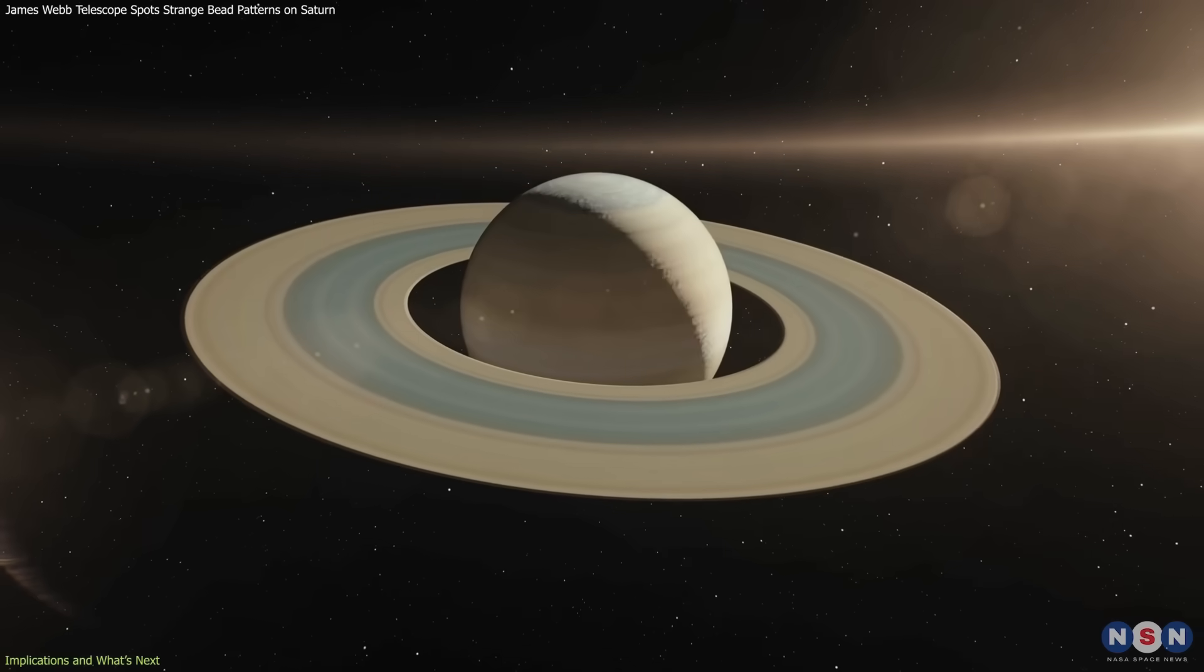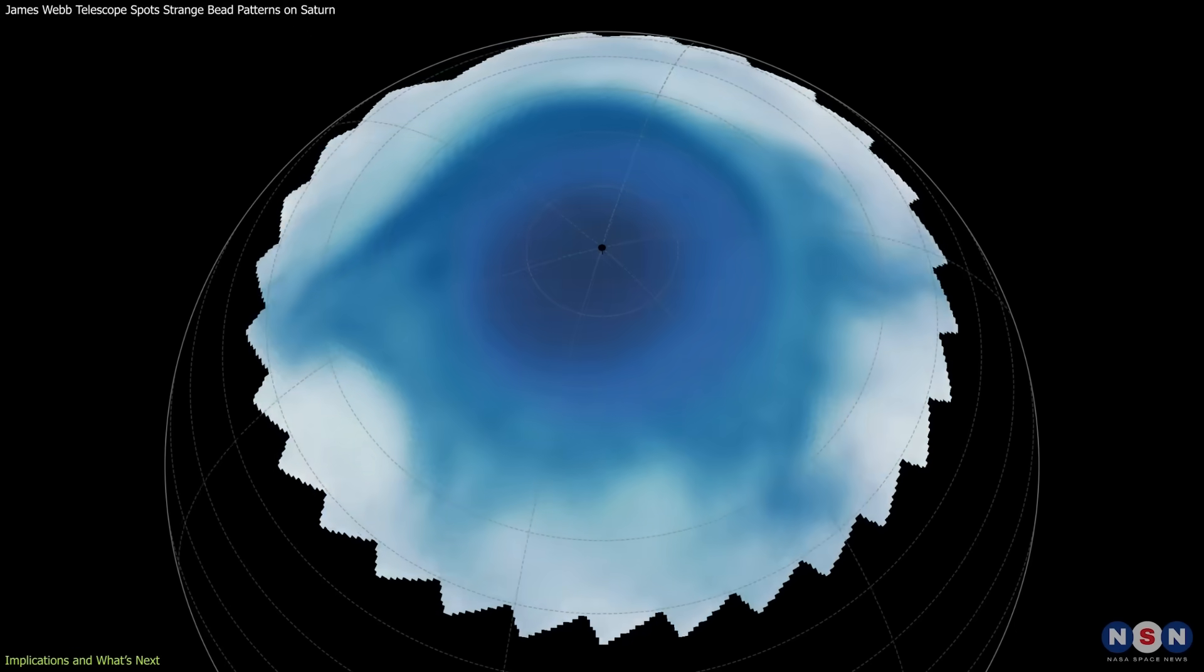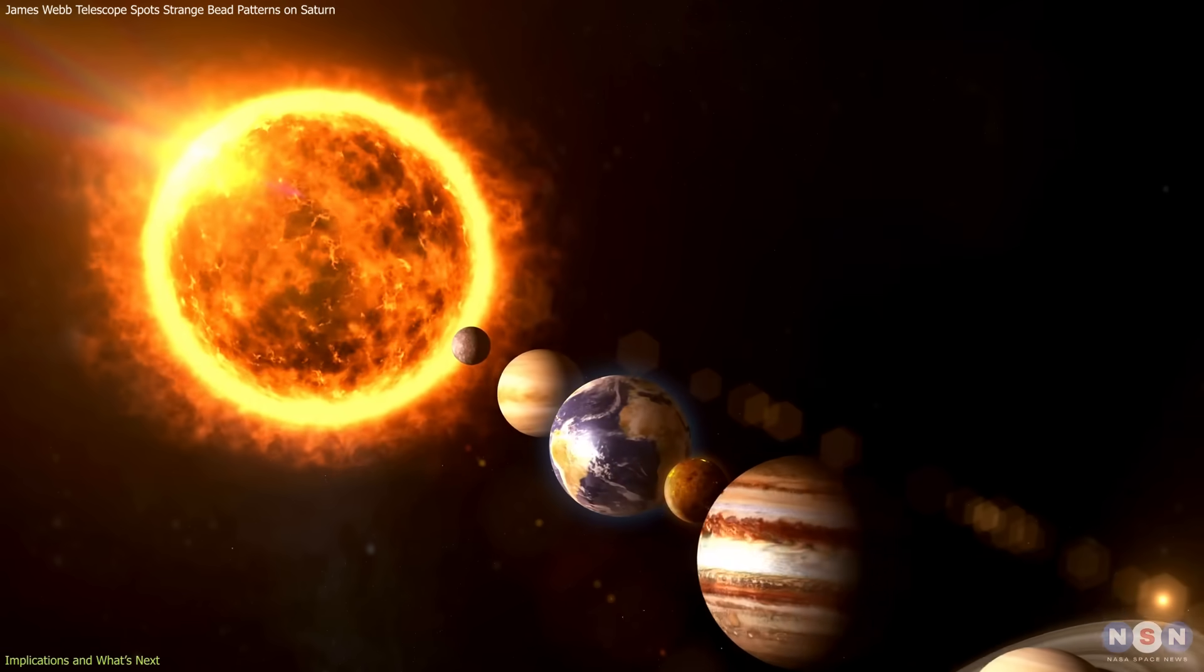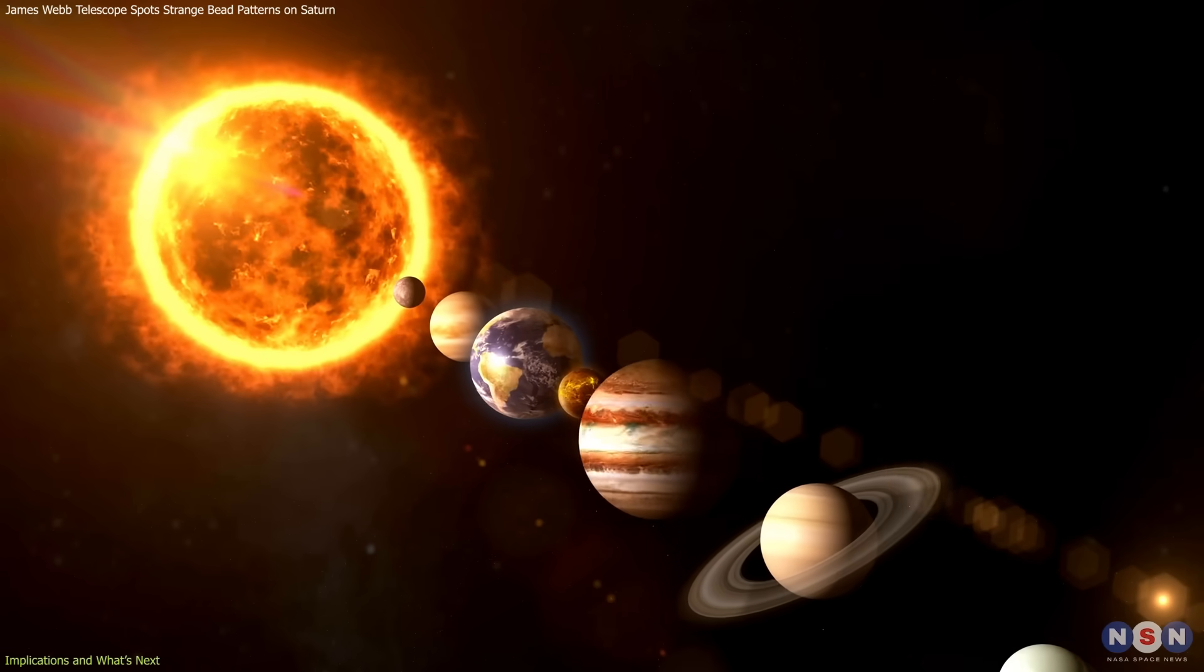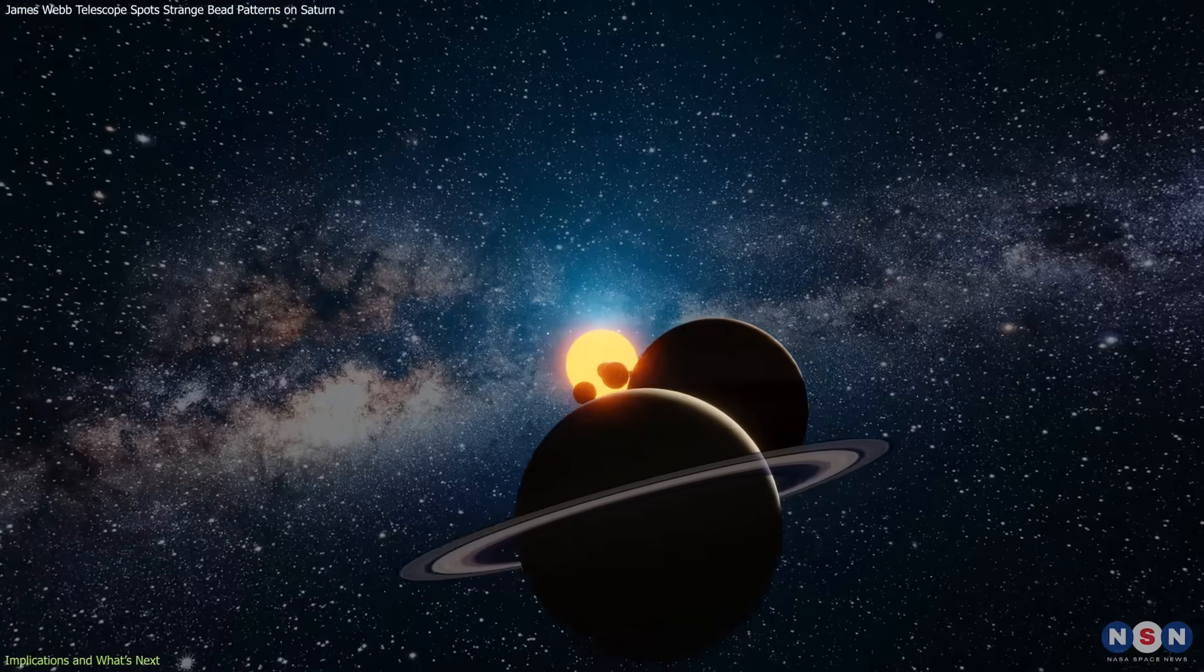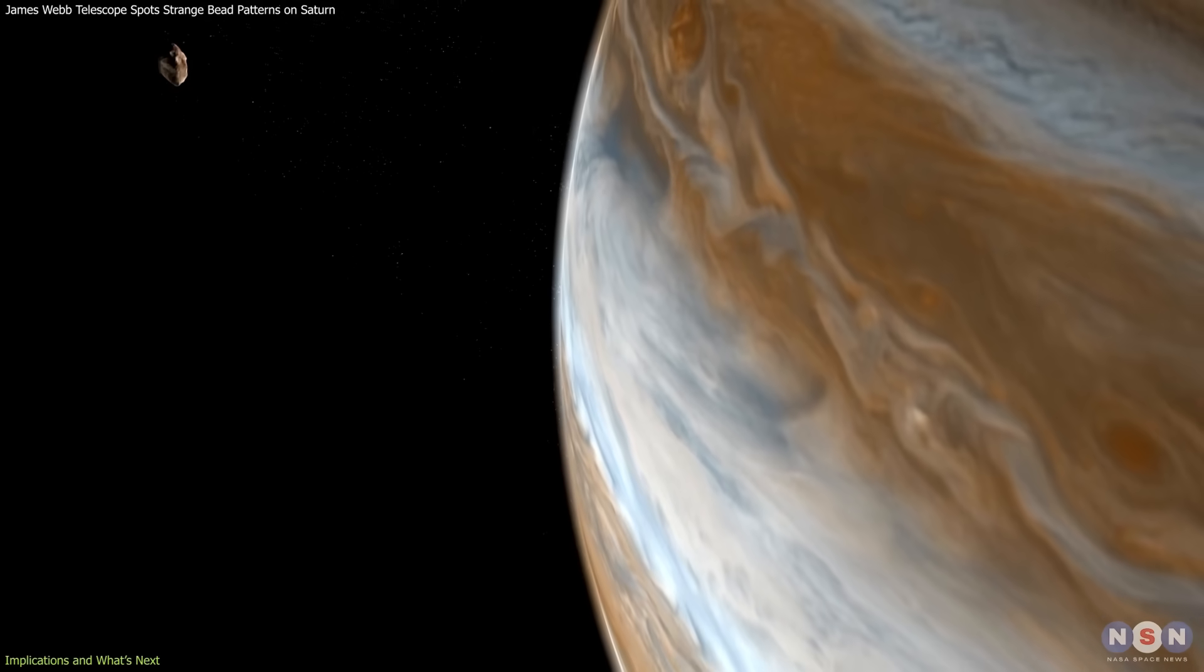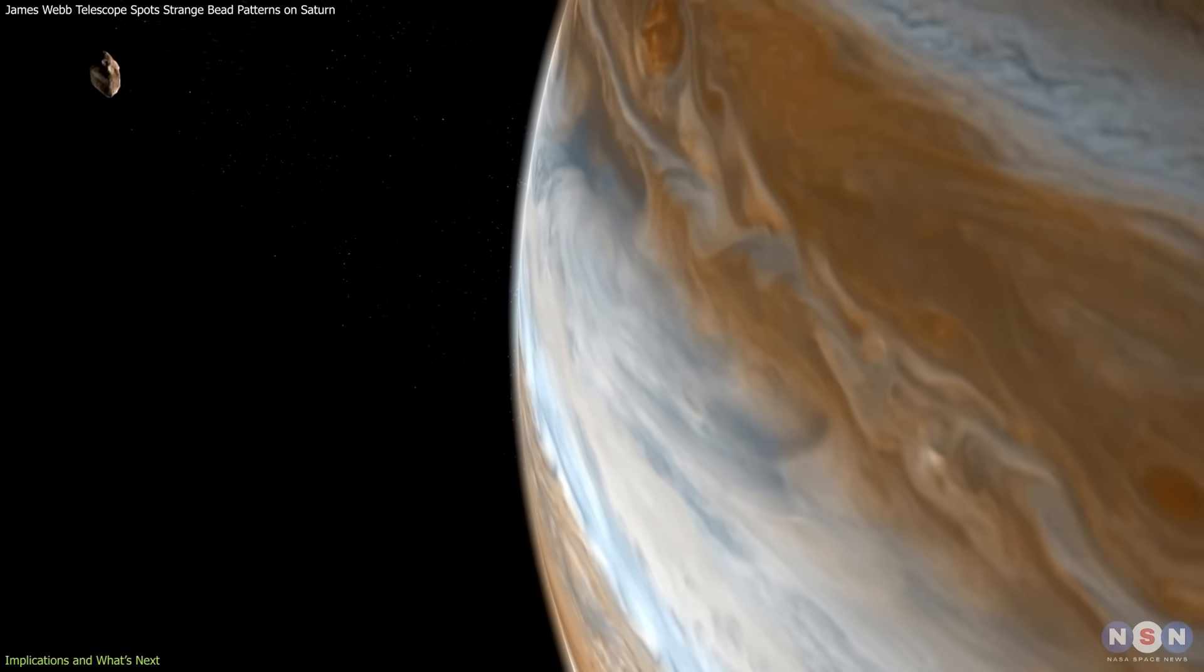The implications extend beyond Saturn. If bead-like and star-shaped features exist in its atmosphere, it raises the possibility that Jupiter, Uranus, and Neptune could harbor similar phenomena. Each has its own magnetic field and auroral processes, and it could reveal whether they too hold hidden patterns in their upper layers.